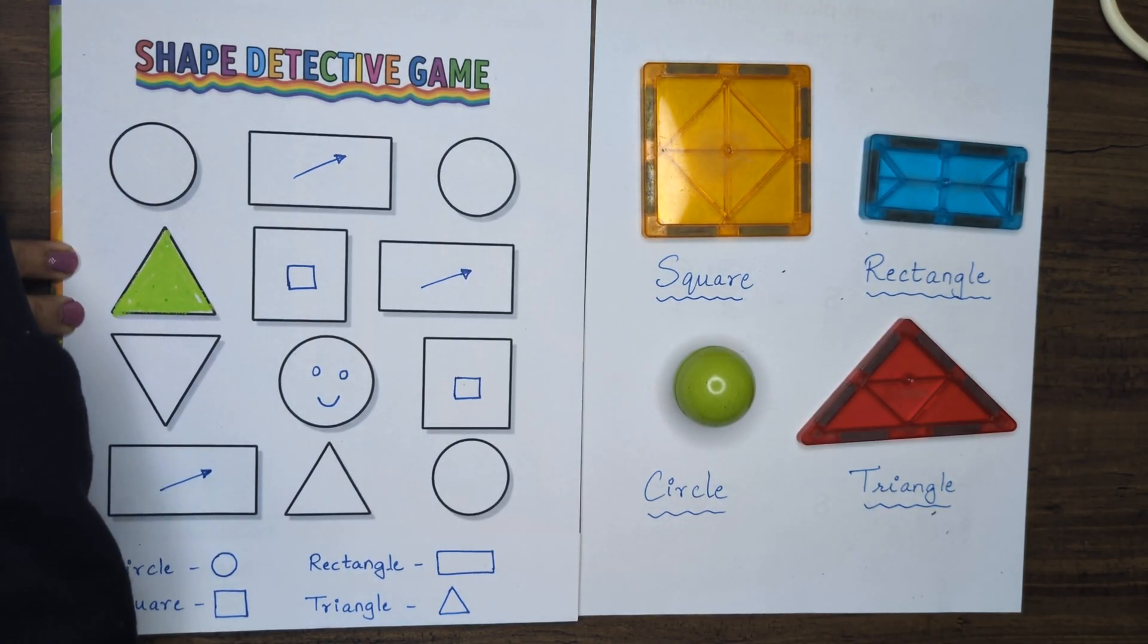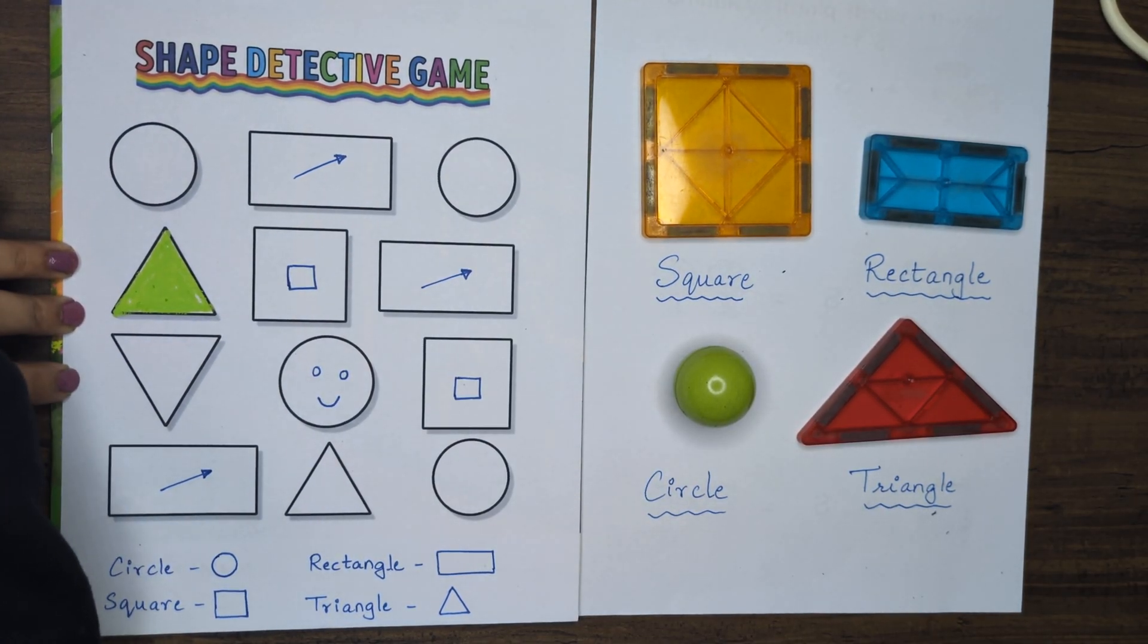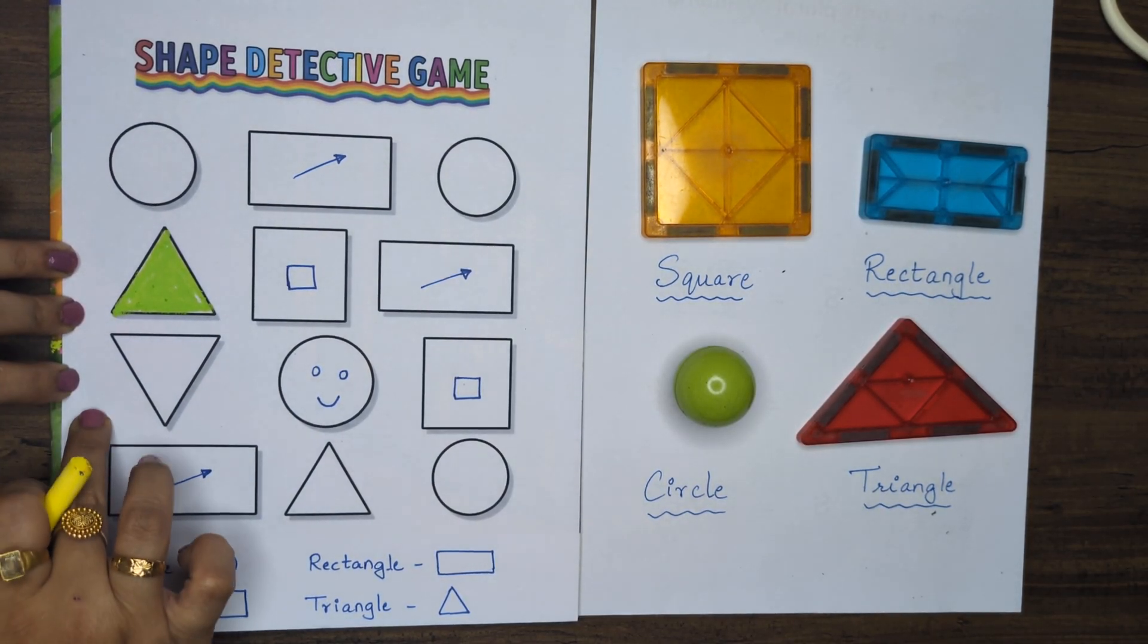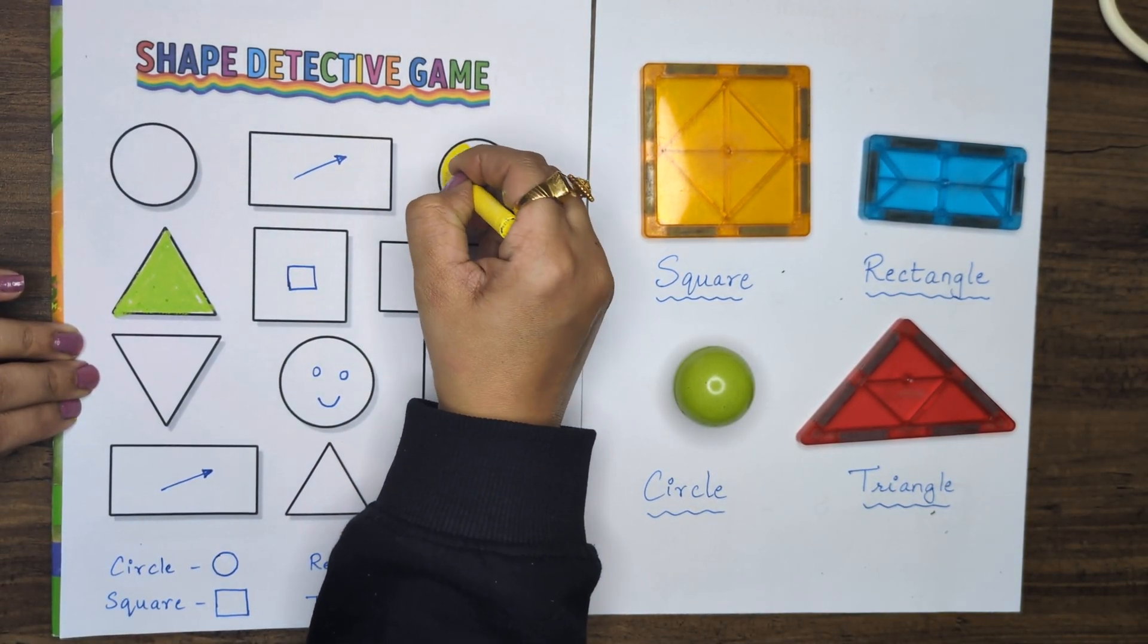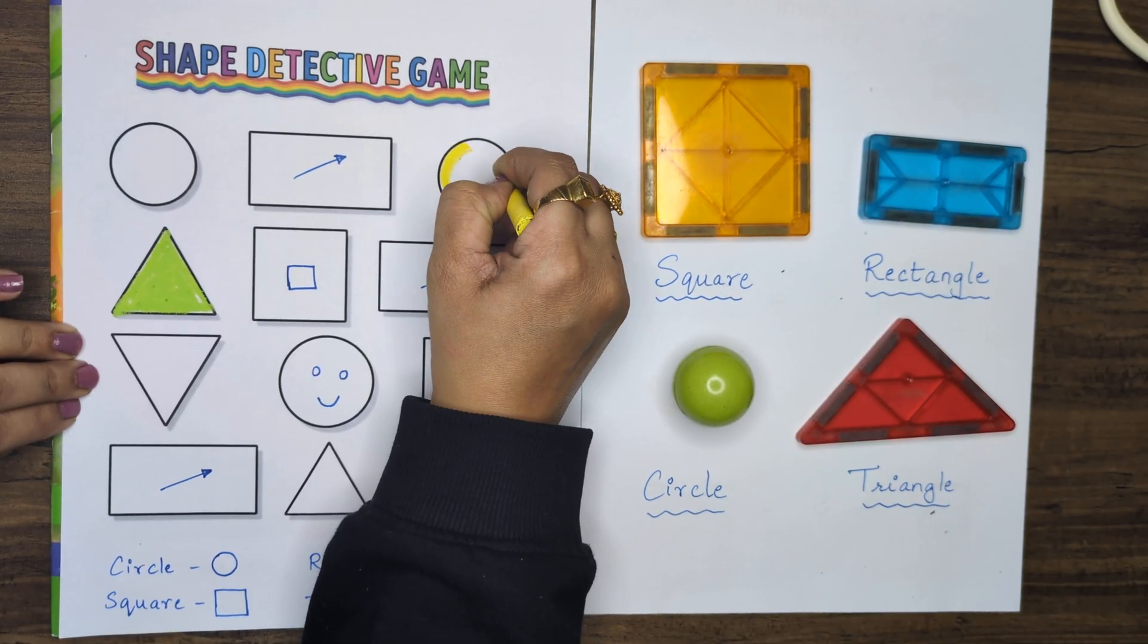Now the next question is, color any one circle yellow. Let me choose this circle as yellow. Excellent.